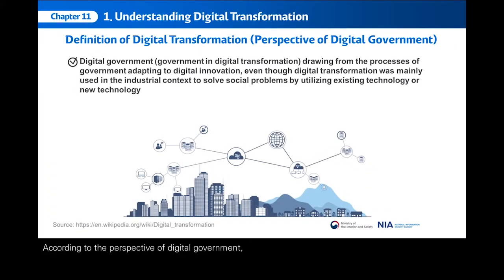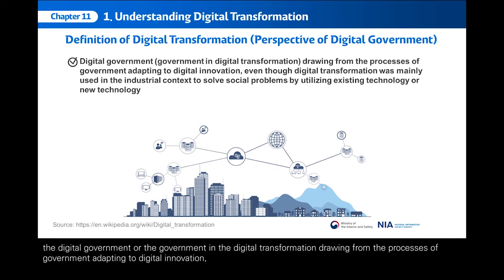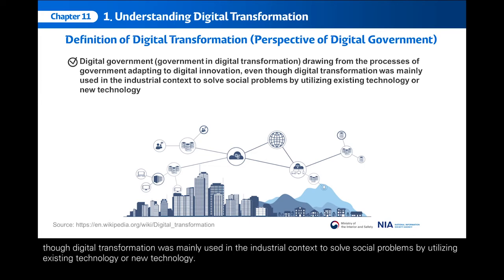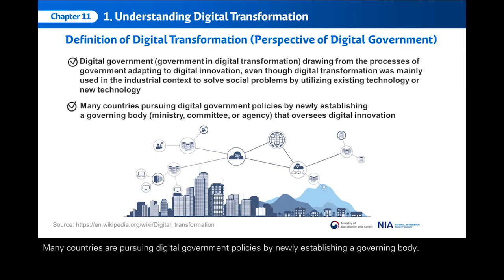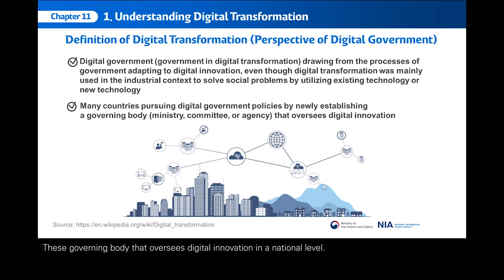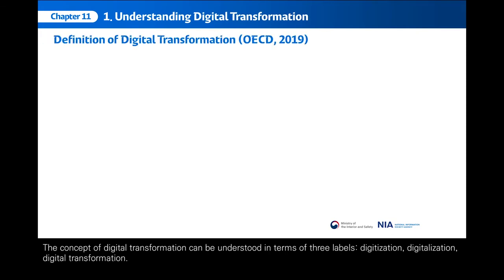According to the perspective of digital government, the government in digital transformation draws from the process of government adapting to digital innovation. Though digital transformation was mainly used in the industrial context to solve social problems by utilizing existing or new technology, many countries are pursuing digital government policies by newly establishing a governing body — including ministries, committees, or agencies — that oversees digital innovation at the national level. The concept of digital transformation can be understood in terms of three labels: digitization, digitalization, and digital transformation.